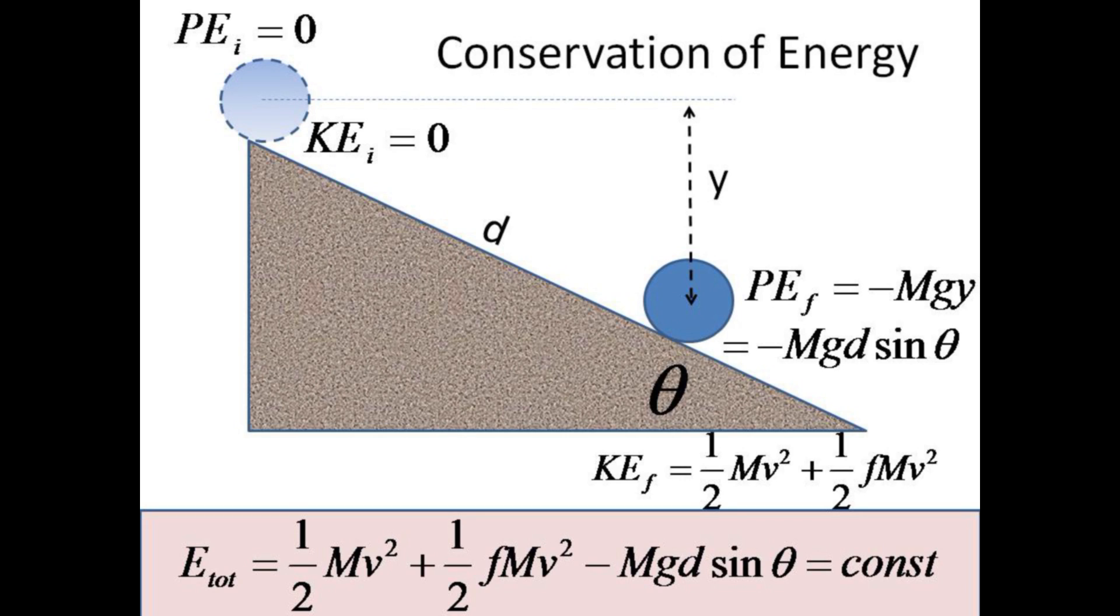Thus the total energy will be translational, one-half mv squared, plus rotational, one-half f times mv squared, plus the negative drop in potential energy, minus mgd sine theta.